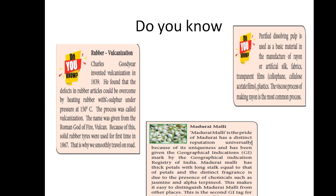Charles Goodyear discovered the vulcanization process in 1839. He found that defects in rubber articles could be overcome by heating rubber with sulfur under pressure at 150 degrees Celsius. This process is called vulcanization. The name was given from the Roman god of fire, Vulcan. Because of this, solid rubber tires were used for the first time in 1867, which is why we can travel smoothly on the road.